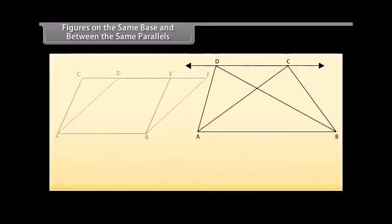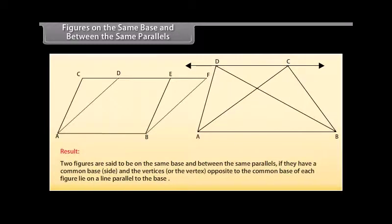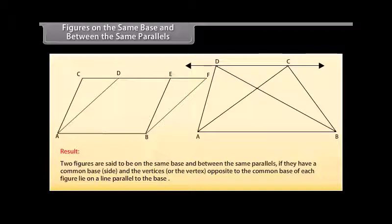So we can say that two figures are said to be on the same base and between the same parallels if they have a common base side and the vertices or the vertex opposite to the common base of each figure lie on a line parallel to the base.